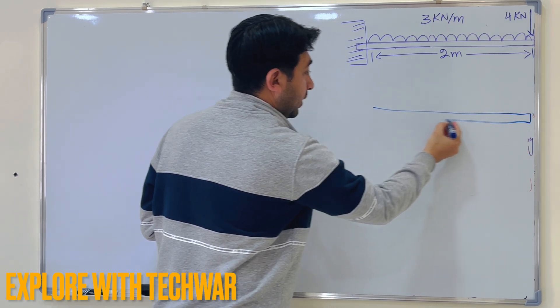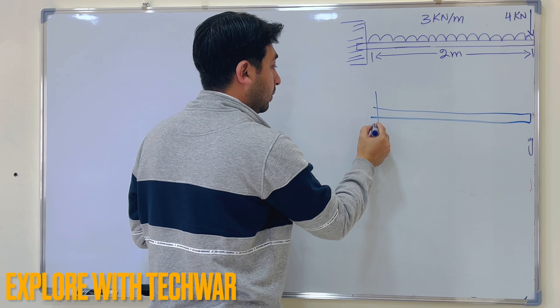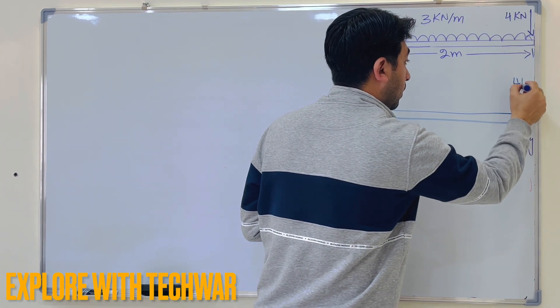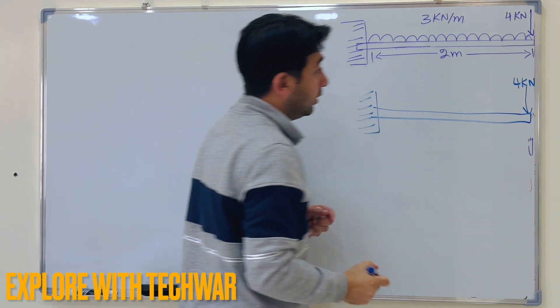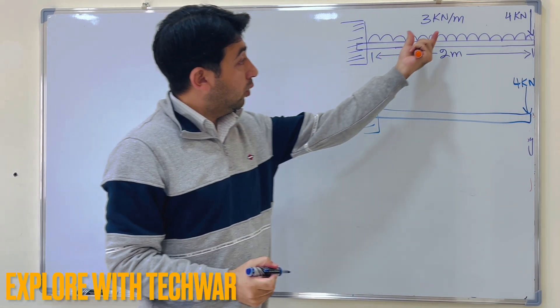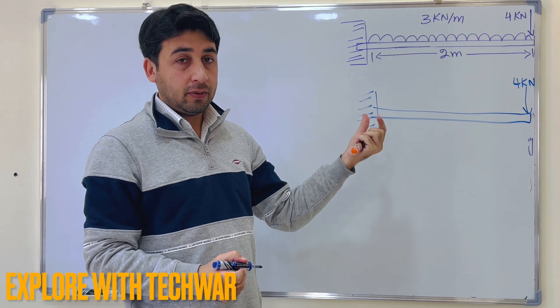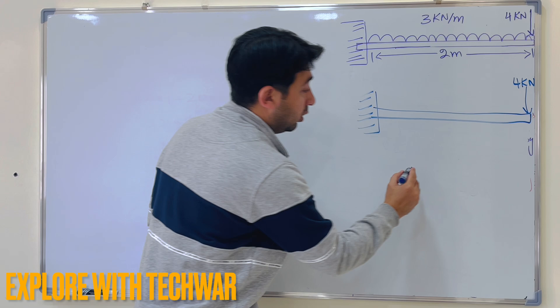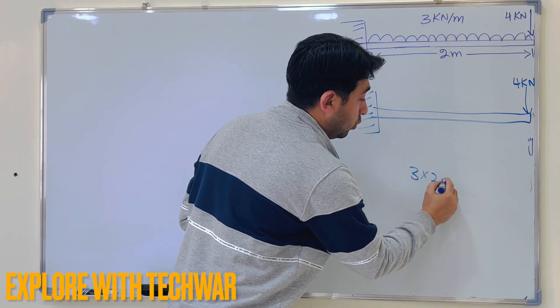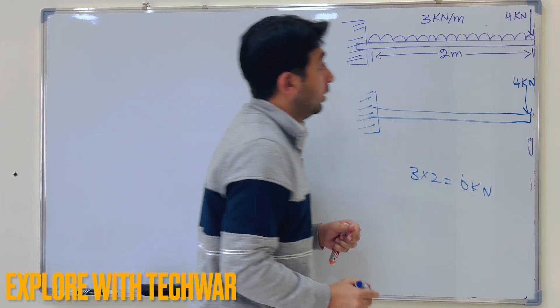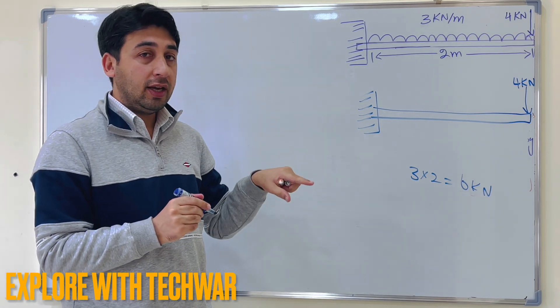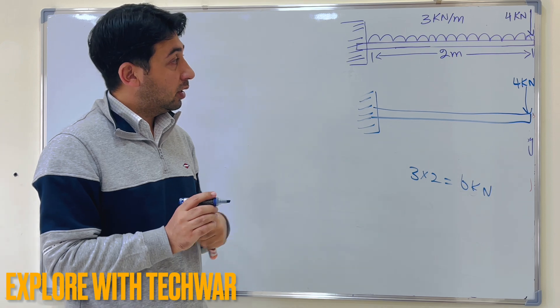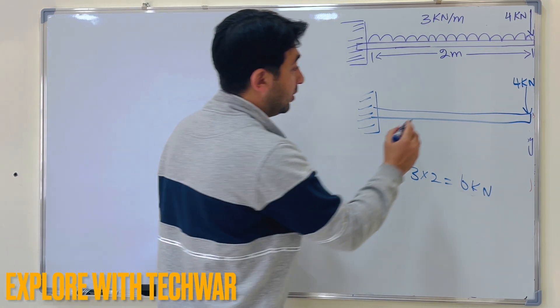So if I redraw the figure, you see here we have a point load of 4 kN, we have UDL 3 kN per meter, but the total length of the beam is 2 meters, so 3 times 2 which is 6 kN. So the 3 kN per meter UDL we can convert it into 6 kN a point load and where the 6 kN will act at the center of the beam.